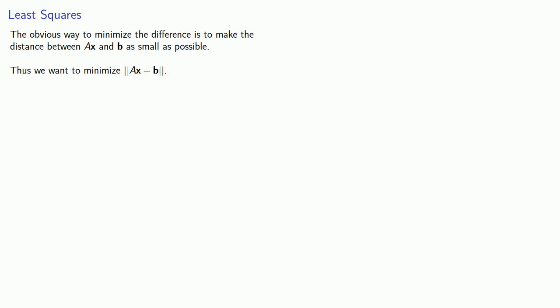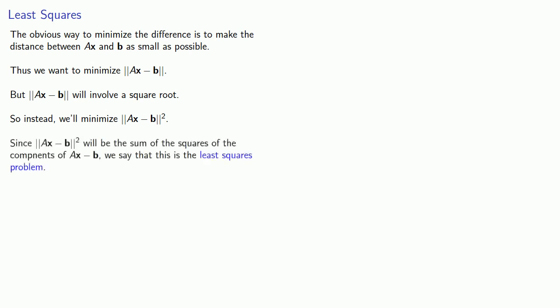But remember, when we calculate a norm this way, this will involve a square root, which is a little bit messy. So instead, we'll minimize the square of the norm ||Ax - b||². And since ||Ax - b||² will be the sum of the squares of the components of Ax - b, and we want to minimize the sum, we say that this is the least squares problem.